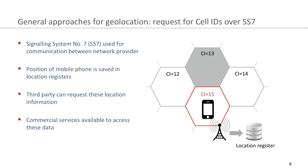Signaling System Number 7 is a protocol used for communication between network providers. Network providers need to know in which cell a mobile phone is located to enable communication. These informations are saved in location registers and a third party can easily request these location informations. I want to refer to the talk by Tobias Engel given two years ago, which really goes into the details of this method. There are also commercial services available to access this data.